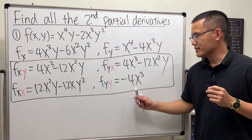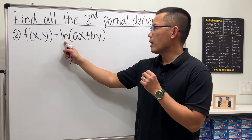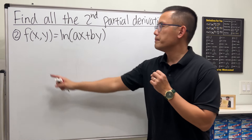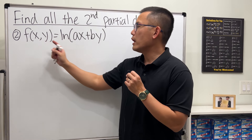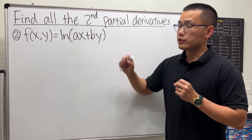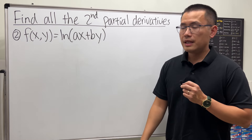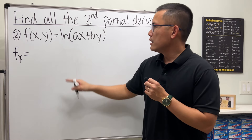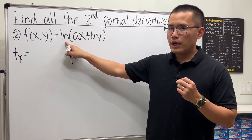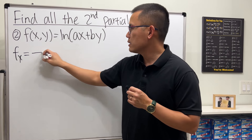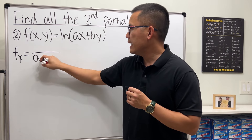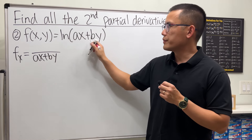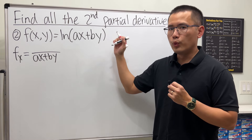Let's do another example. For the next one we have f equals ln of ax plus by, where x and y are the variables and a and b are just constants. Let's go ahead and do the partial with respect to x first.